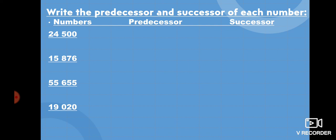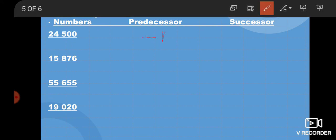After that, write the predecessor and successor of each number. This is a concept from class 3. What is predecessor? The predecessor means just before. You can write the first number. If you have any difficulty, what do you do? Minus 1. You can subtract 1. The successor means just after. You can write the next value. If you have difficulty, you can add 1.